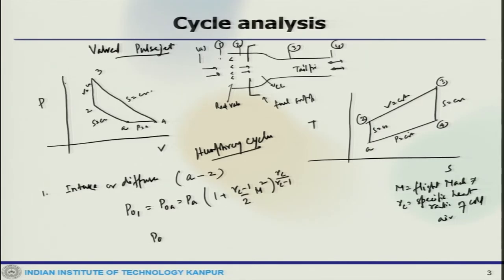However, there are losses which will take place in the diffuser. The pressure at state 2 is always less than 1, but the process in the diffuser is assumed to be adiabatic, having an isentropic efficiency. That means there is an ideal situation or there could be a non-ideal situation. In a non-ideal situation, P₀2 = PA(1 + ηD(γc - 1)/2 M²)^(γc/(γc - 1)), where ηD is the isentropic efficiency of the diffuser.